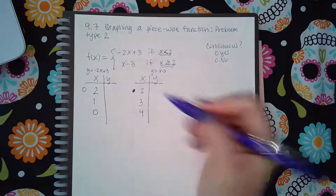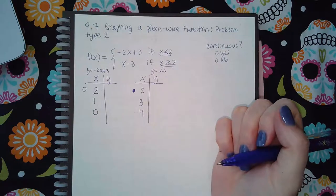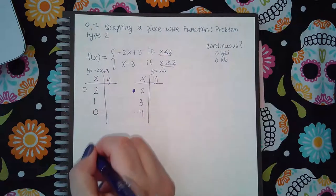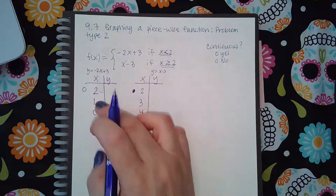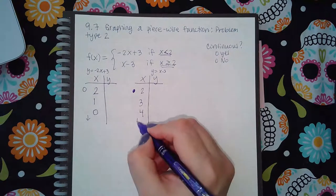I could keep going and picking more values less than 2 and more values greater than 2, but once we have this idea we can just draw an arrow after this point and an arrow after that point.